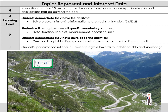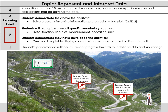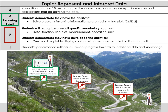Let's take a look at our mountain. We have Charlie here and he's going to go up the mountain to reach his goal. He hits different learning targets along the way — some that might be before the scale, some that might be that foundational knowledge at level 2 — and then eventually he's able to get to our goal. Once he is able to get to the goal, he is provided the opportunity to go beyond the goal, and that's that level 4 learning target.